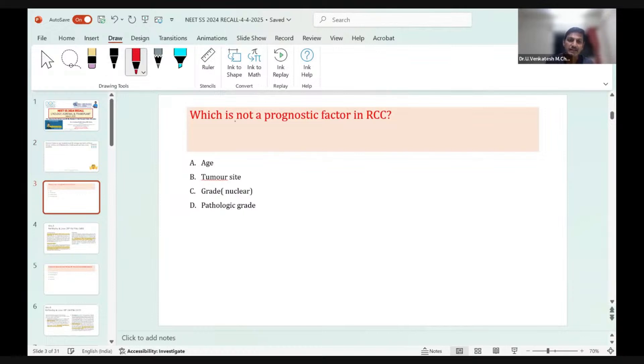Let me go to the first question. Which of the following is not a prognostic factor in RCC? This time the questions are mostly directly from Bailey and Love as well as Sabiston. We were able to take references exactly from the lectures and notes. When it comes to urology, adrenal, and transplant, almost all the questions have been completely covered from our lectures.